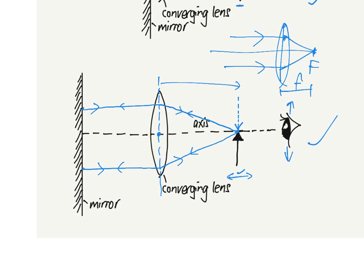So that means when you get this kind of image coinciding with the object, the distance from the optical center to the image here, or the object, will be your focal length.